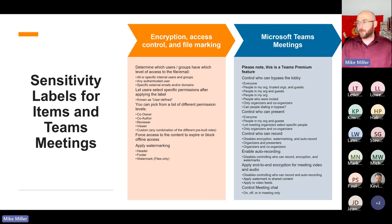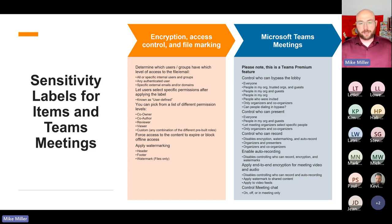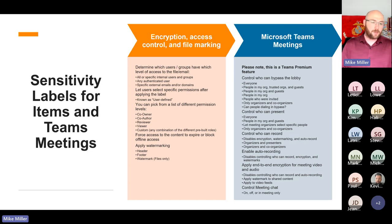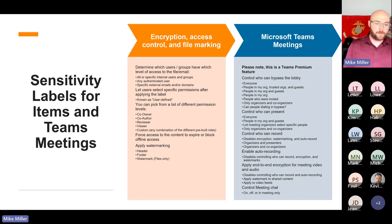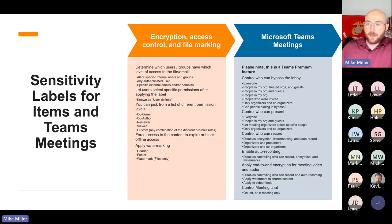You can let users specify the permissions themselves — that's known as user-defined. You can pick from pre-built permissions like co-owner, co-author, reviewer, and viewer, or create custom combinations. You can also force access to expire, block offline access, and do file markings with headers, footers, or watermarks. The watermarks feature is a files-only capability.